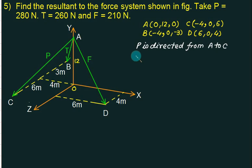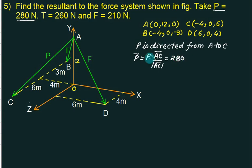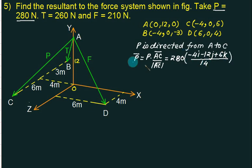P-bar equals P multiplied by the unit vector along AC, that is AC-bar upon magnitude of AC-bar. The value of P is 280. AC-bar equals C minus A gives (−4i − 12j + 6k). The magnitude is √(4² + 12² + 6²) = 14. So 280 divided by 14 is 20, giving P-bar = −80i − 240j + 120k.